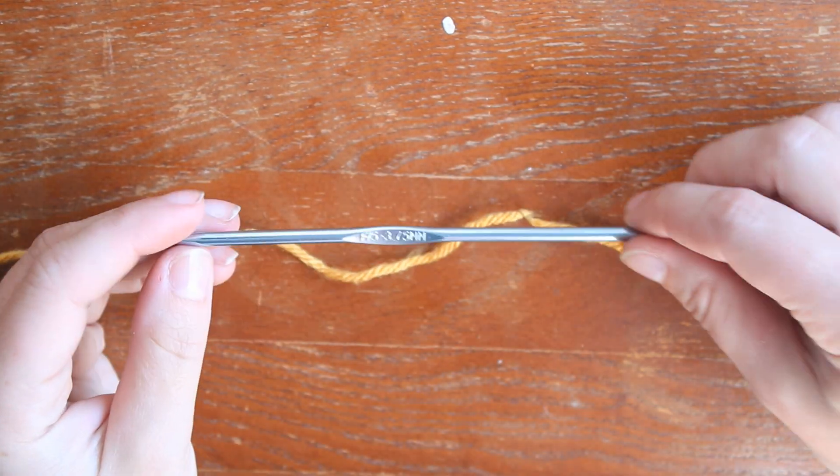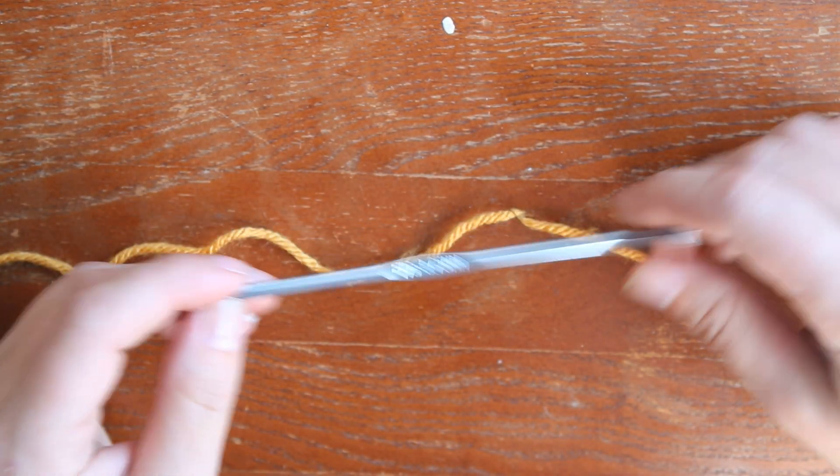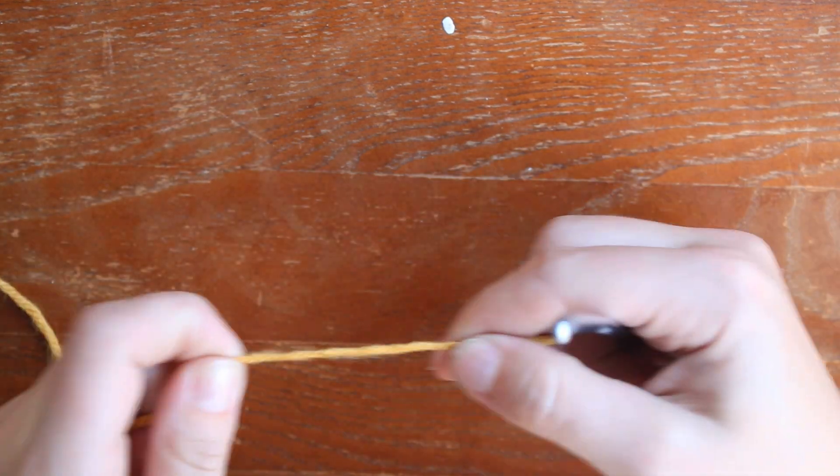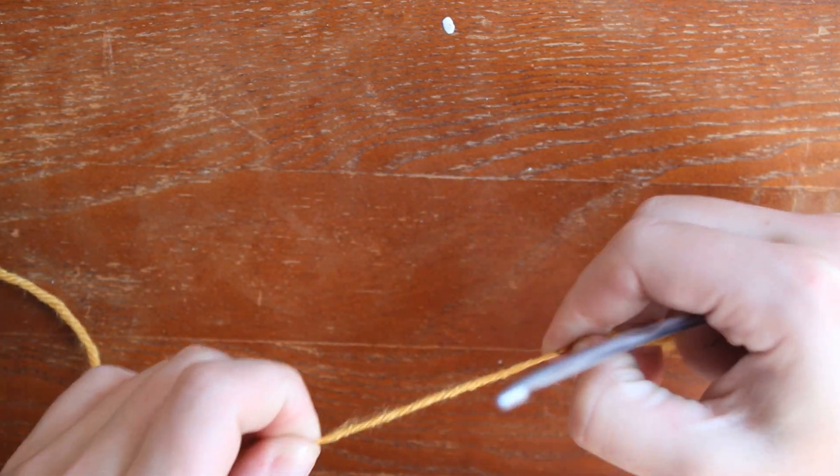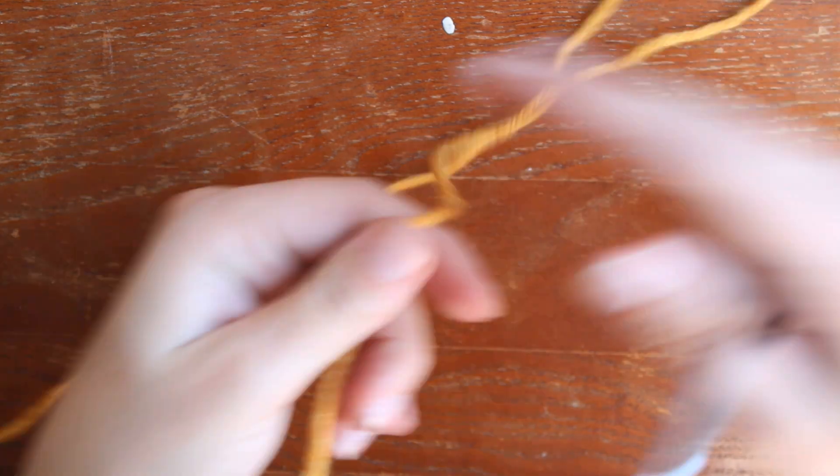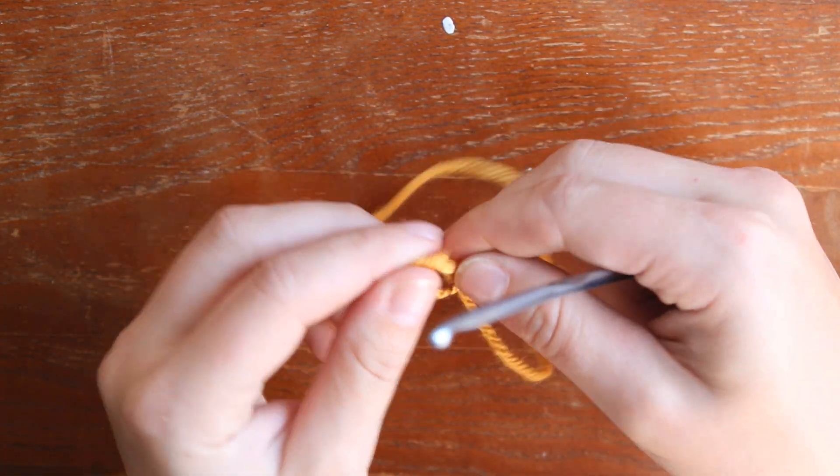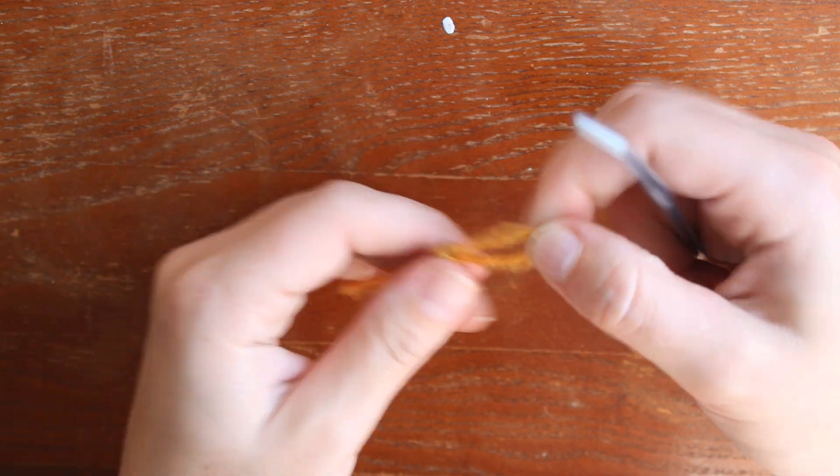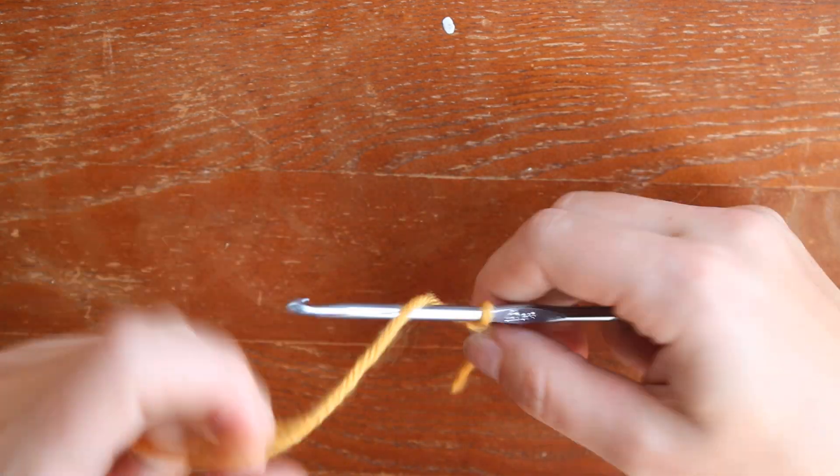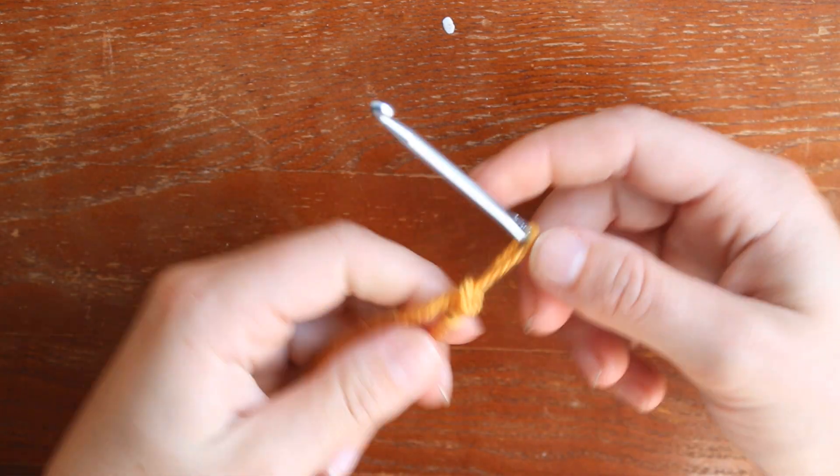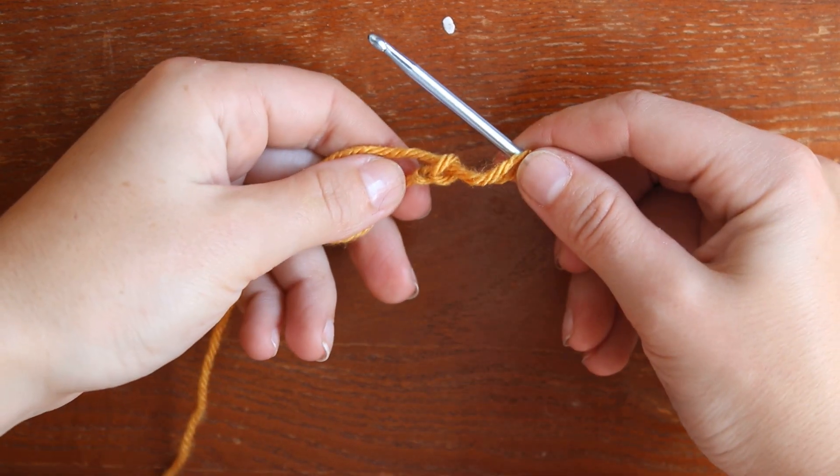Hey guys, today I'm using a 3.5 millimeter hook and some dollar tree yarn like always. So the first thing we're gonna do is make a slipknot, then I'm gonna single crochet an even number of stitches. So today I'm doing 10.